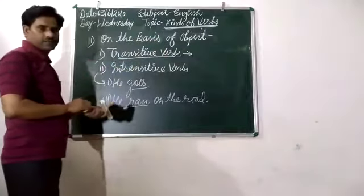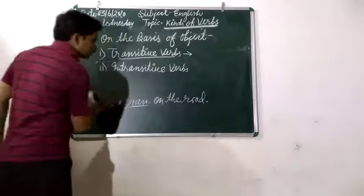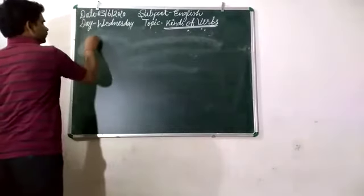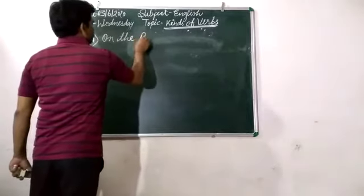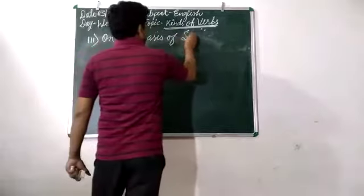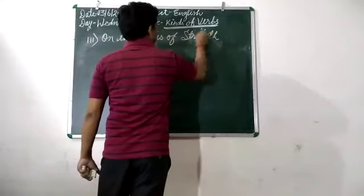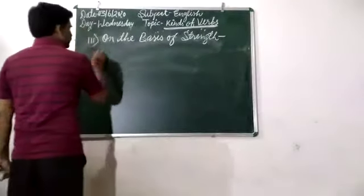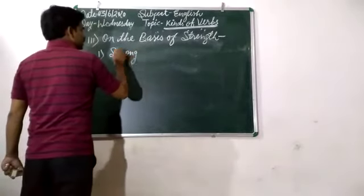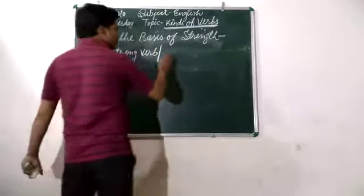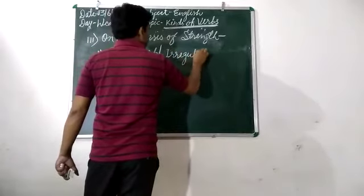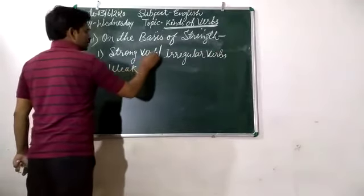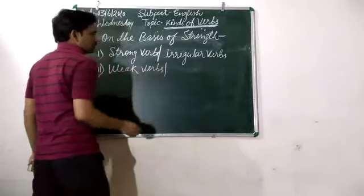These are verbs. Now, on the basis of tense, there are two types of verbs. The first is strong verbs, that are also called irregular verbs. And secondly, weak verbs are regular verbs.